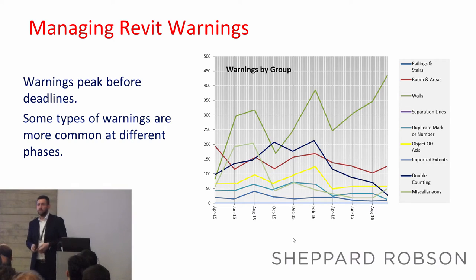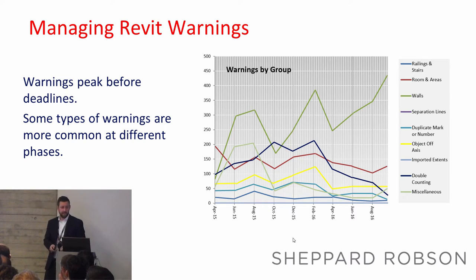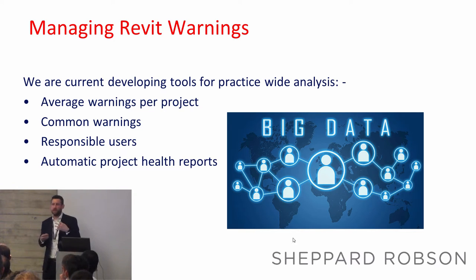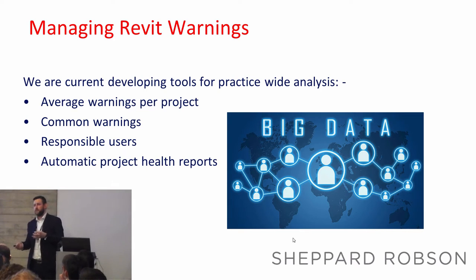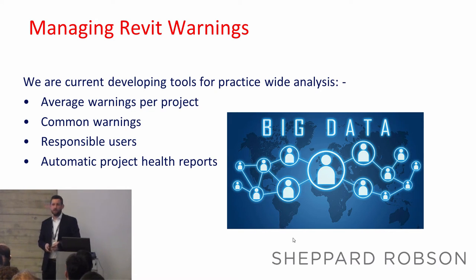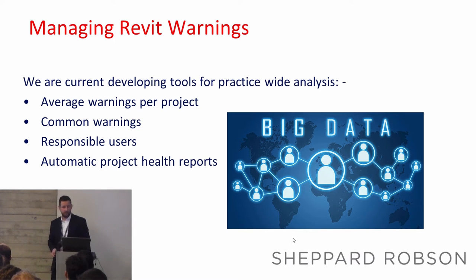Typically you see warnings peak towards the end of deadlines as people get haphazard with modelling, and you also see different warnings at different project stages. As a company, we're moving toward the big data side — capturing warnings across multiple projects, presented in a dashboard where we can see real-time performance, warning counts, and the overall health of files. This allows us to be proactive because we're getting real-time feedback.